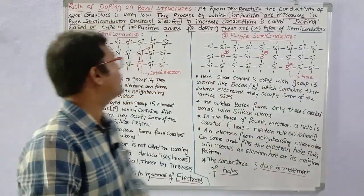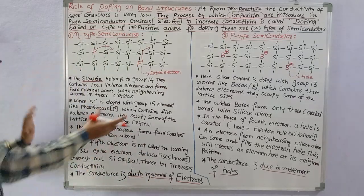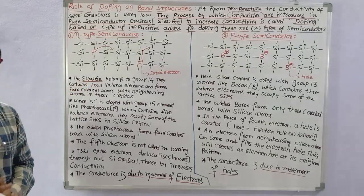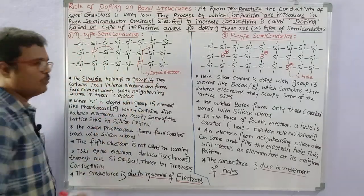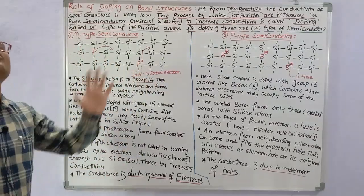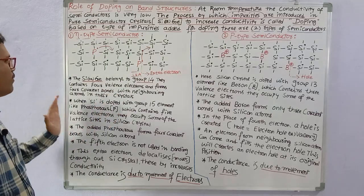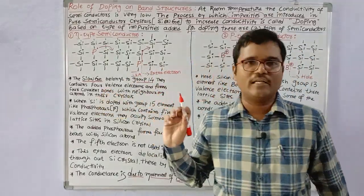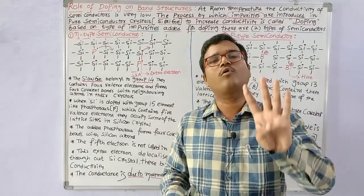Let us look at the first type: N-type semiconductor. Silicon and germanium are semiconductors that belong to group 14 in the periodic table. They contain four valence electrons and form four covalent bonds with neighboring atoms in their crystal.